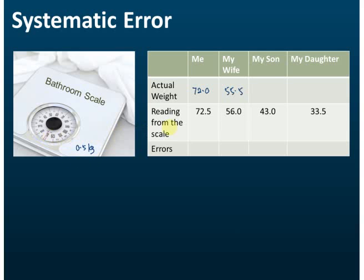So my son's actual weight is 42.5 kg and my daughter's actual weight is 33.0 kg. The error is 0.5 kg for me, 0.5 kg for my wife, 0.5 kg for my son, and 0.5 kg for my daughter. This type of error is called systematic error.